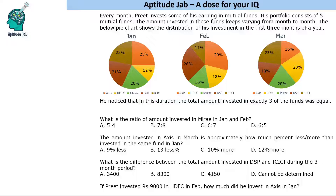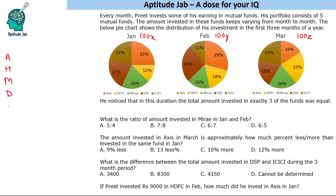It is further given that in this duration the total amount invested in exactly three of the funds was equal. So let us say in January he invested 100x, in February he invested 100y, and in March he invested 100z. Let's write the funds: Axis, HDFC, Mirai, DSP, and ICICI — for January, February, and March.